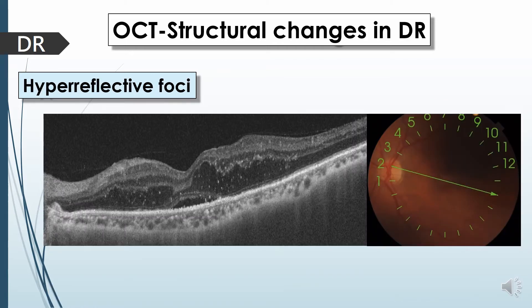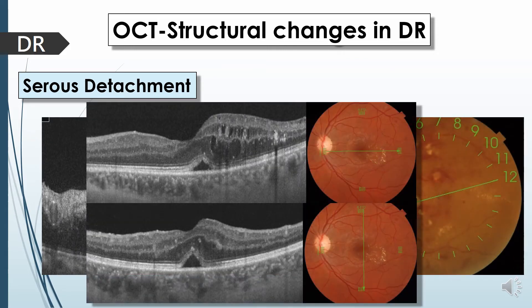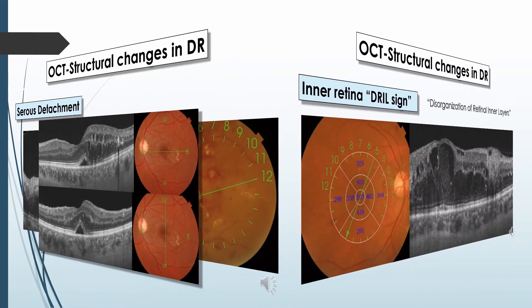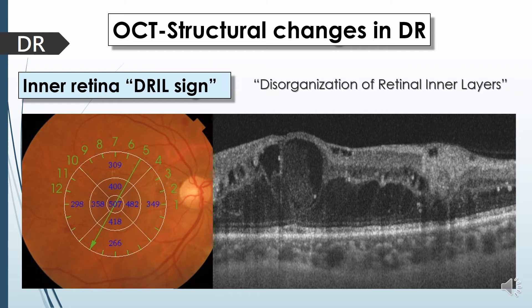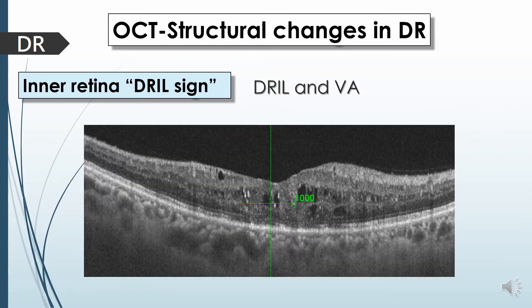Hyperreflective foci may represent subclinical features of lipoprotein extravasation, acting as a precursor of hard exudates, or may represent degenerated retinal cells or macrophages attempting to engulf the cells. Serous detachment represents loss of the outer retinal barrier and appears as clear fluid accumulating in the subretinal space. The DRIL sign, or disorganization of retinal inner layers, is a condition where we cannot distinguish the inner retinal layers from each other, and it carries a poor prognostic value on visual acuity when it involves the central 1 mm region.